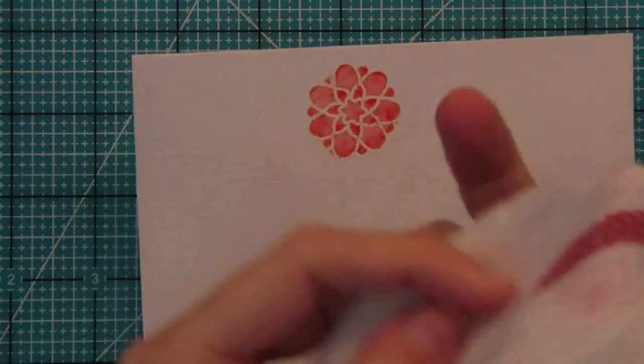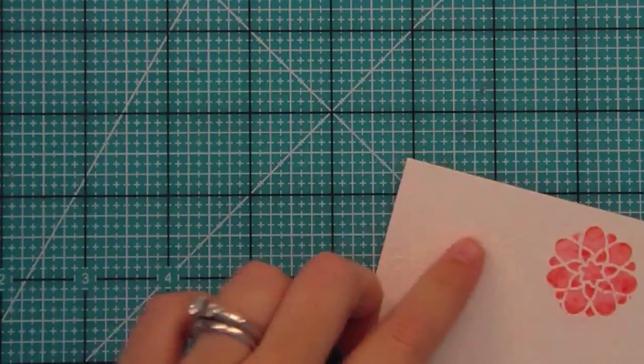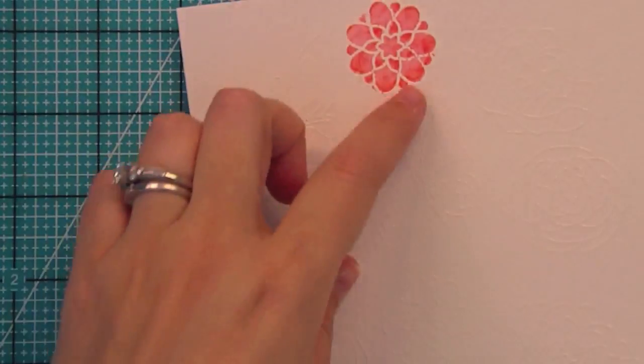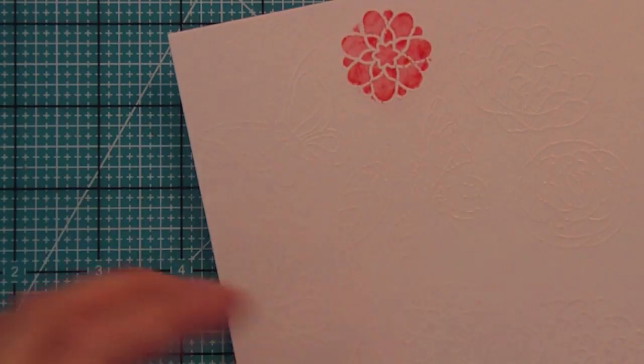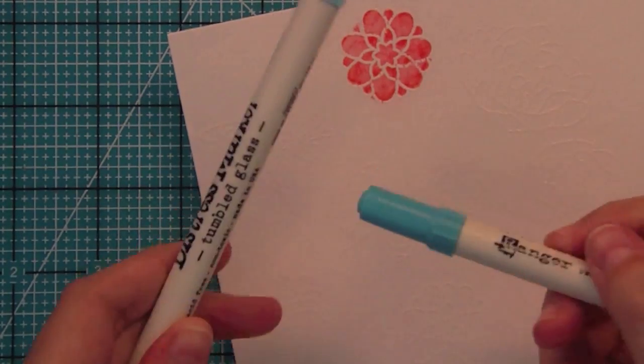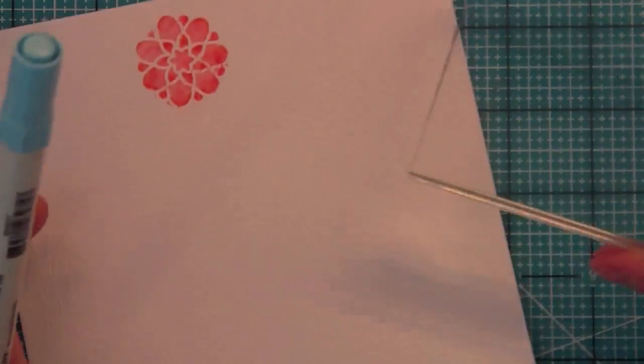The reason I use some white heat embossing powder is the heat embossed area resists the markers which means I can color outside the lines and then just use a little towel and wipe off the embossed part and it'll be really bright white again. I love that because I'm never good at staying inside the line so it's a really cool way to just not have to worry about it.